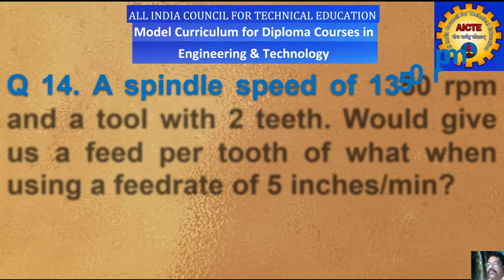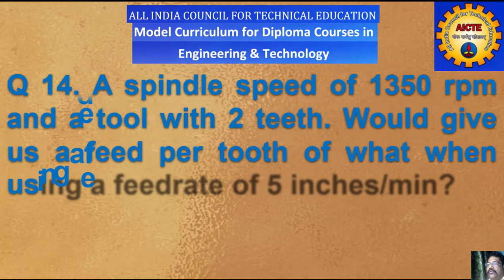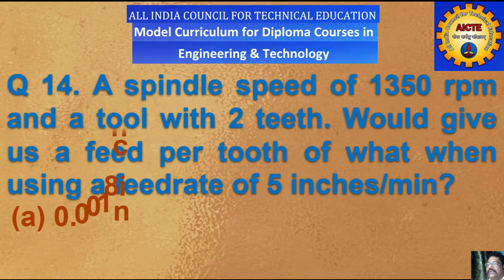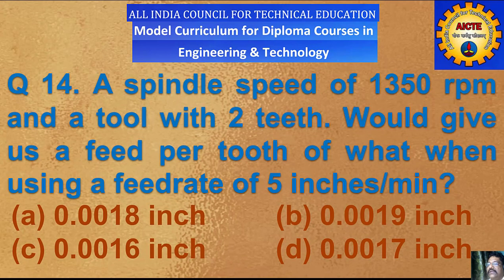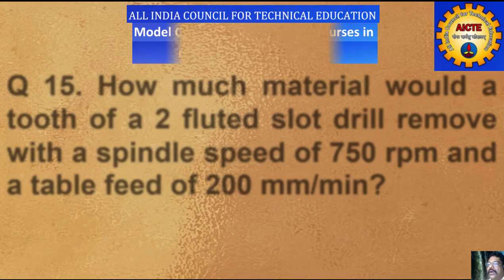Question number 14: a spindle speed of 1350 rpm and a tool with 2 teeth — what feed per tooth would result when using a feed rate of 5 inches per minute? A) 0.0018 inch, B) 0.0019 inch, C) 0.0016 inch, D) 0.0017 inch.